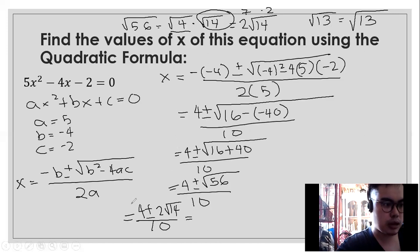Much better na mag-lowest term po tayo para hindi tayo mahirapan. Ano yung common factor ng 4, 2, at saka 10? 2. So, hansin din natin. What will remain is 2 plus minus square root of 14 over 5.